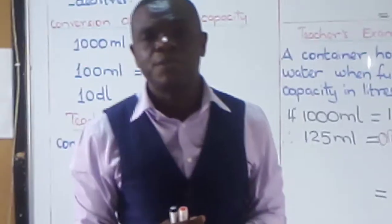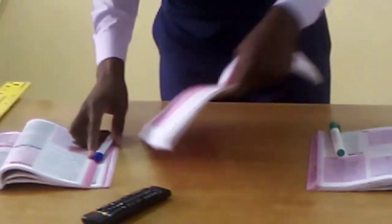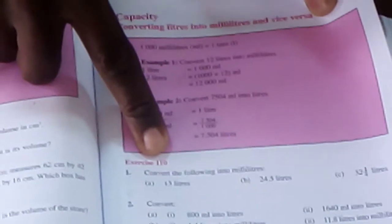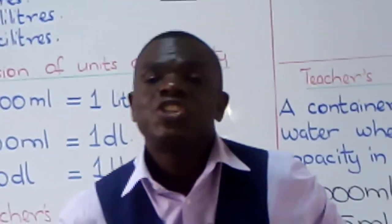Boys and girls, I hope you have understood. Please do more practice on that. I would like you to do exercise 110, on page 173, all the questions. Then you can come to exercise 111 — select some questions there, don't do all. Then exercise 112 — select some questions there. Make sure you've done enough practice so that you are able to understand.